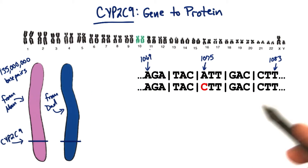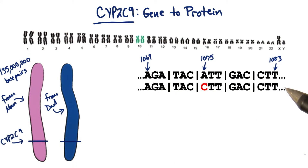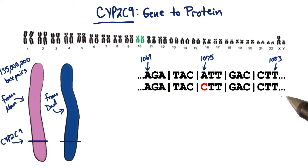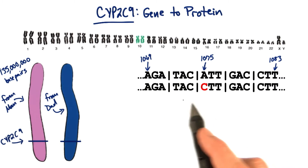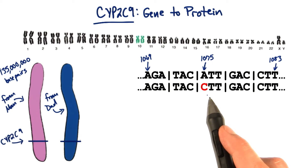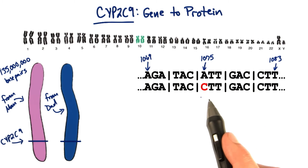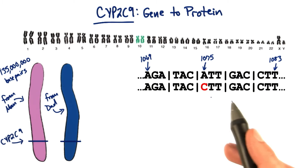There's one allele of the CYP2C9 gene that's associated with enhanced warfarin efficacy and potential toxicity, and you can see that allele here. The change is from an adenine to a cytosine at position 1075.